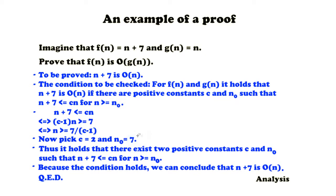Because we found an example in which there are two positive constants there exists at least one solution for which it holds. And that's all we had to prove to make this condition true. So because this condition holds we can conclude that n plus 7 is O(n). And that's what we had to prove. Q.E.D.